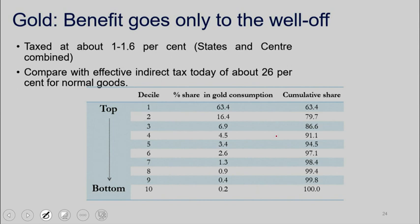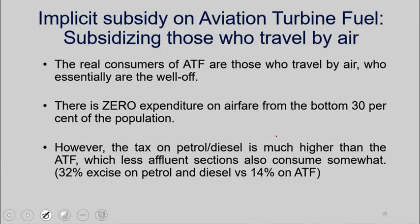The implicit subsidy on gold is basically 2 minus 26 times the total amount consumed by the non-poor, which is a huge amount. A similar calculation can be done for aviation — who really travels? We actually provide a subsidy to aviation turbine fuel, because the poor don't travel by plane. In the case of petroleum products, we charge a higher normal tax because these things create pollution — they are considered demerit goods. If you make the comparison against the normal charge on petroleum, which is maybe 50-60%, you will see that the implicit subsidy for the rich could be quite high.